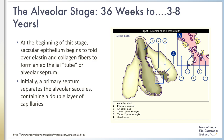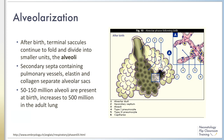The alveolar stage occurs from 36 weeks and continues into childhood. At the beginning of this stage, the epithelium of the terminal saccules begins to fold over elastin and collagen fibers to form an epithelial tube or alveolar septum. Initially, a primary septum, number 2 in the figure above, separates the alveolar saccules. The primary septum contains a double layer of capillaries and is less efficient for gas exchange.